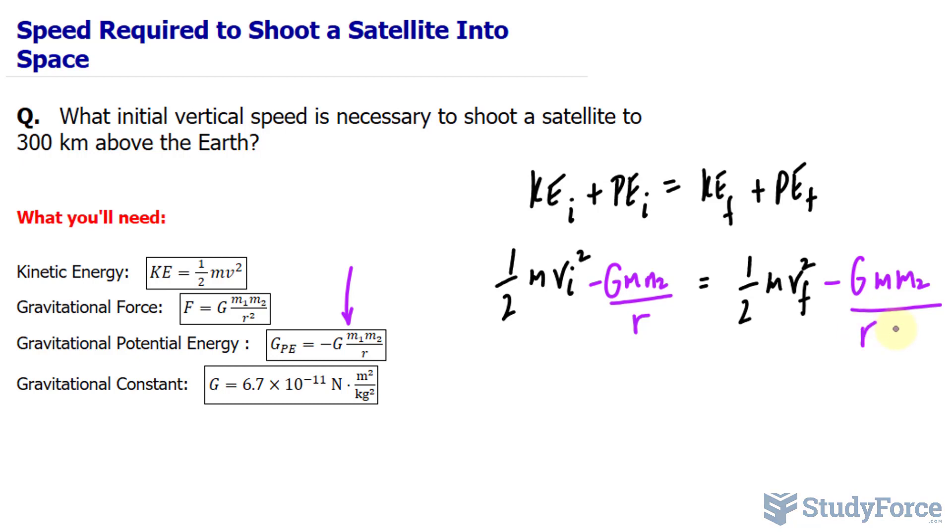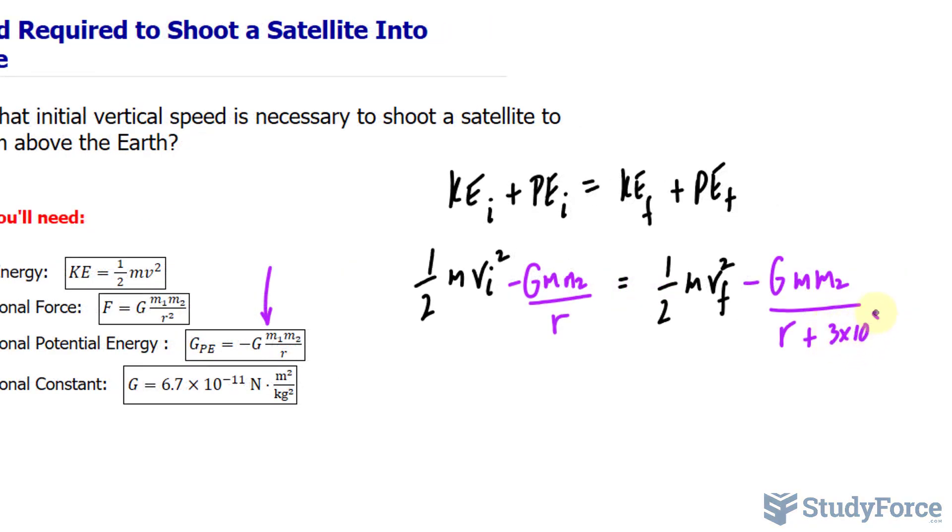So technically, it's the radius of the Earth plus 300 kilometers made into meters, which equates to 300,000 meters. So I'll write down 3 times 10 to the power of 5 meters. The mass of the Earth and the radius of the Earth will be given to you in the question, most likely.